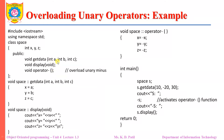The getData function is going to accept the values of a, b, c — that is, three coordinates from the user — and the display function will display those values. When the unary minus operator is applied on the three data members x, y, and z, the sign of each of those data members will get changed.